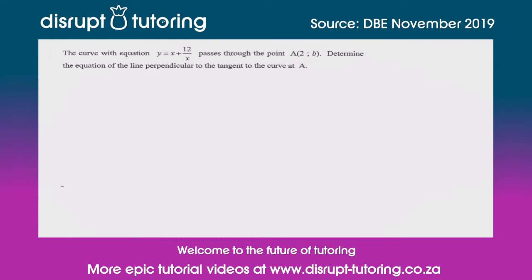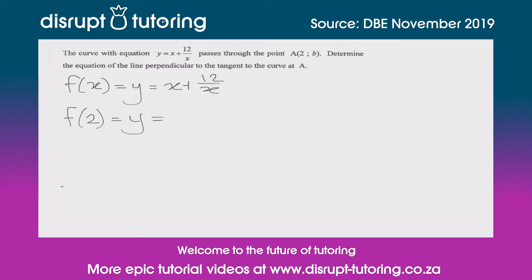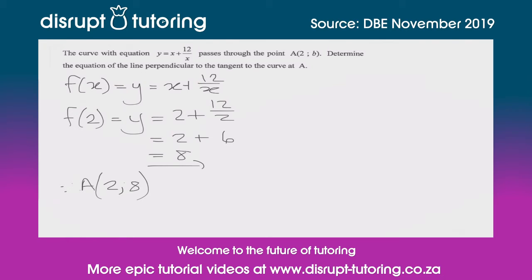Let's reframe this as f(x) = x + 12/x. They've given us a point but haven't given us b, so we can solve for b fairly easily. At f(2), the y-value is going to be 2 plus 12 over 2, which gives us 2 plus 6, and that gives us 8. So therefore we know that point A is the point (2, 8).